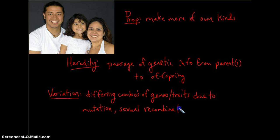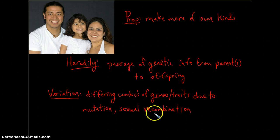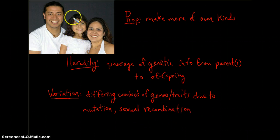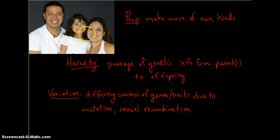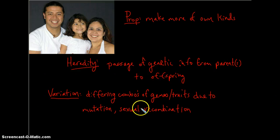Sexual recombination is simply the reshuffling of genes during meiosis and the production of the gametes, so that when a new organism is formed, the organism will have a combination of genes and therefore characteristics of both parents.